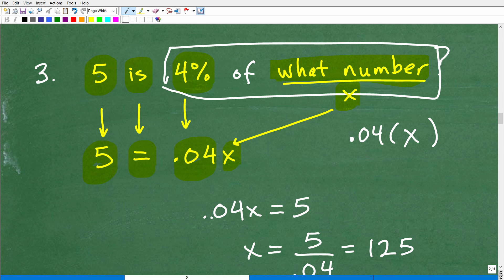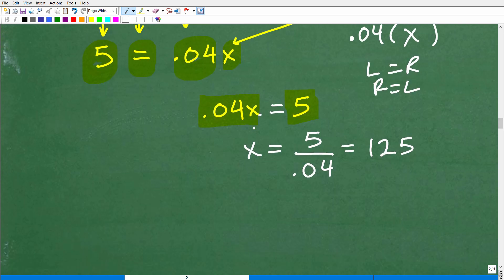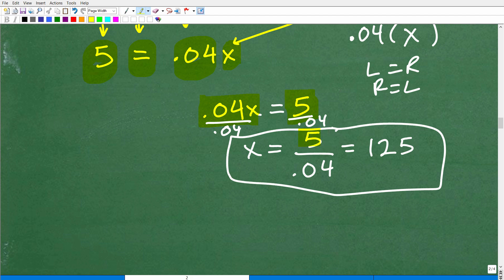So 0.04x is equal to five. I can write that as, well, five is equal to 0.04x. I can write that as 0.04x is equal to five. When you have an equation, the left is equal to the right, and the right is equal to the left. So you can write the equation this way. I'm just flipping sides. And now I'm going to solve for x. Hopefully you know how to solve a basic algebraic equation. Very easy. All I have to do is divide both sides of the equation by 0.04. Five is being divided by 0.04. Going to my calculator, I get 125. That is the answer.